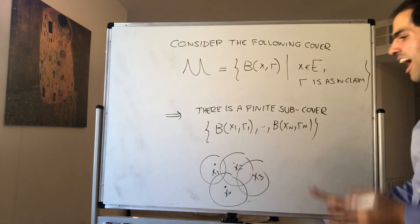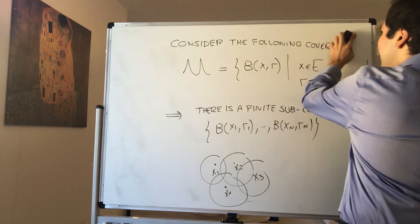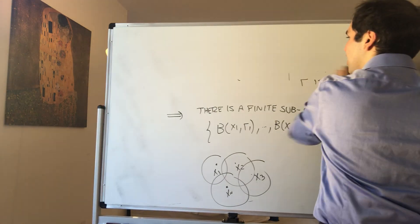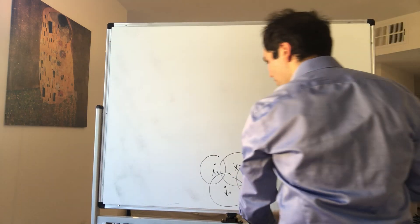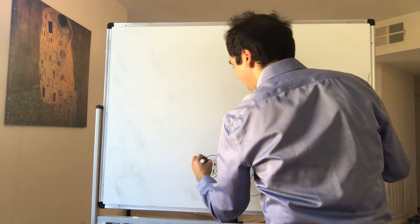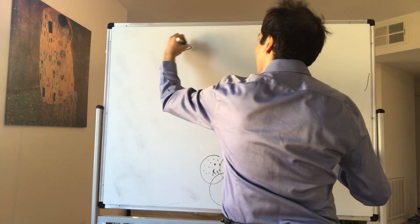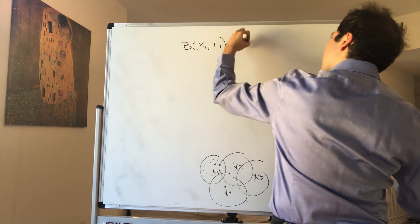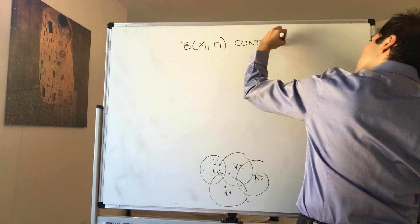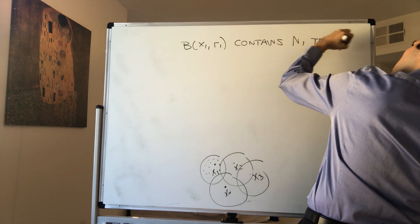But then, what does that mean? How many terms are there in the sequence then? Well, what do we know? We know there are finitely many terms in the first ball, so B(X1,R1) contains N1 terms of Sn.